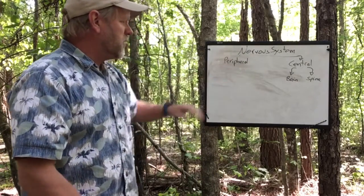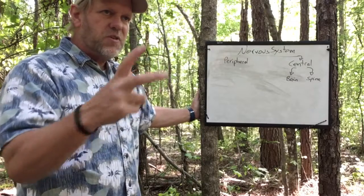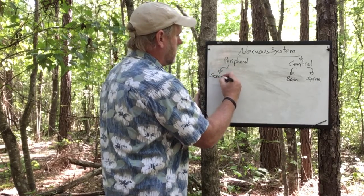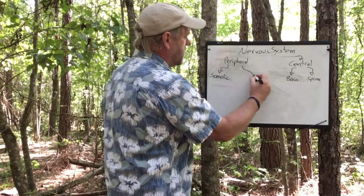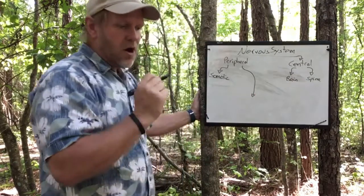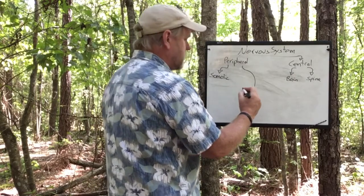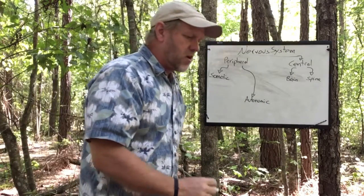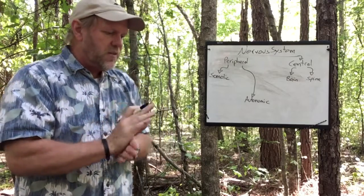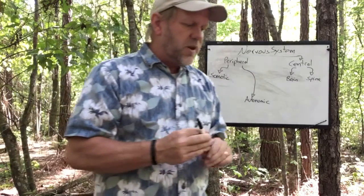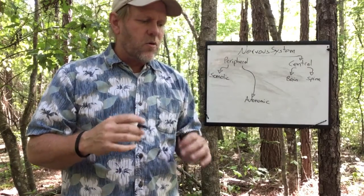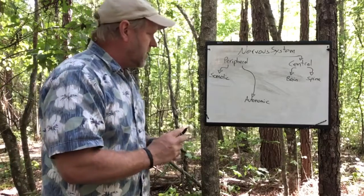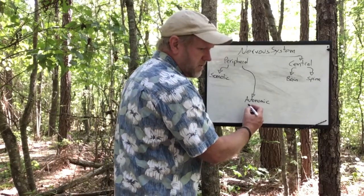The peripheral nervous system has two different areas: the somatic peripheral system and the autonomic nervous system. We'll deal with the autonomic first. The autonomic system deals with your organs, your internal aspects — the things going on inside your body that you're really not paying attention to. It has two areas: the parasympathetic and the sympathetic.